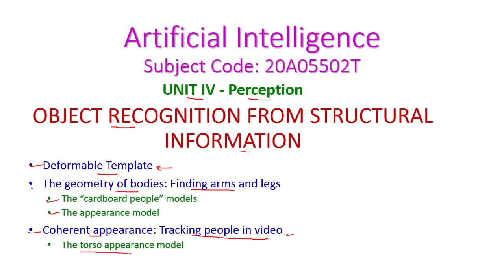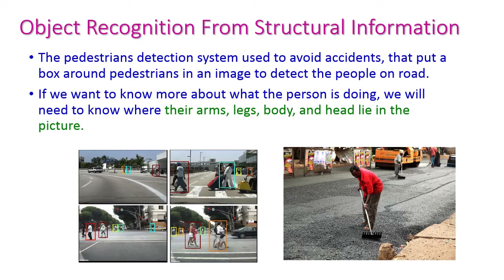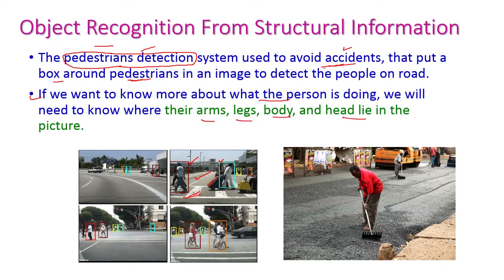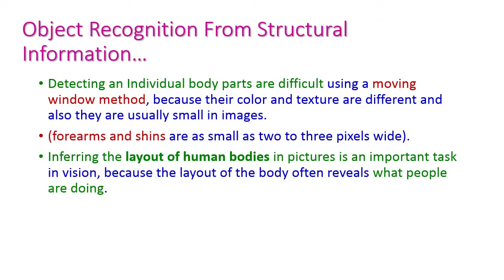In the last class we saw object recognition by appearance, including the pedestrian detection system. The pedestrian detection system puts a box around pedestrians — people who are walking on the road — so we can easily avoid accidents. Now we want to know what the people are doing on the road, so we need to know how their arms, legs, body, and head lie in the picture, to identify what people are doing in the image.